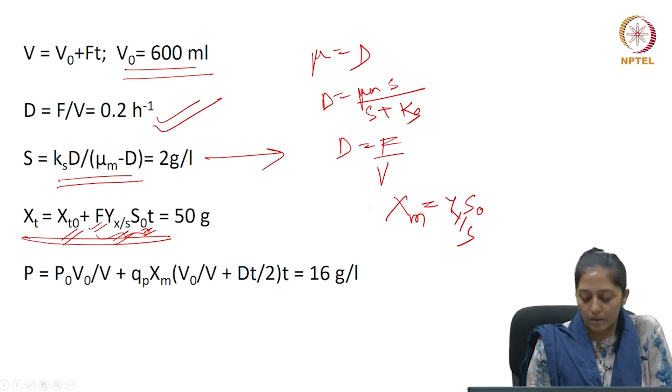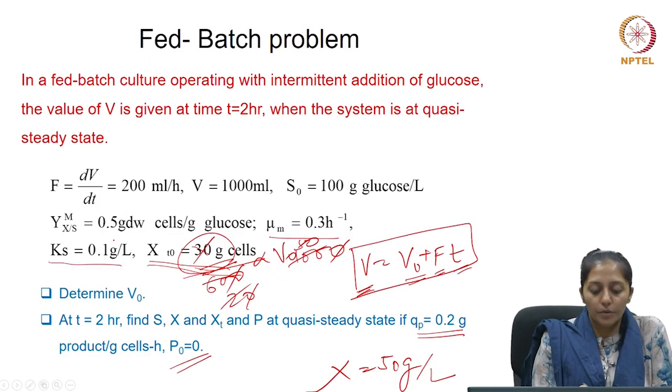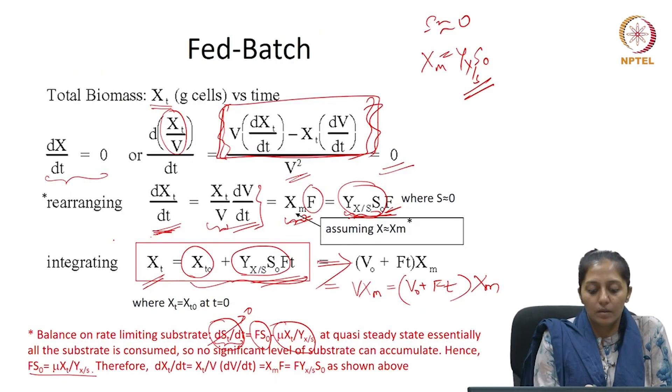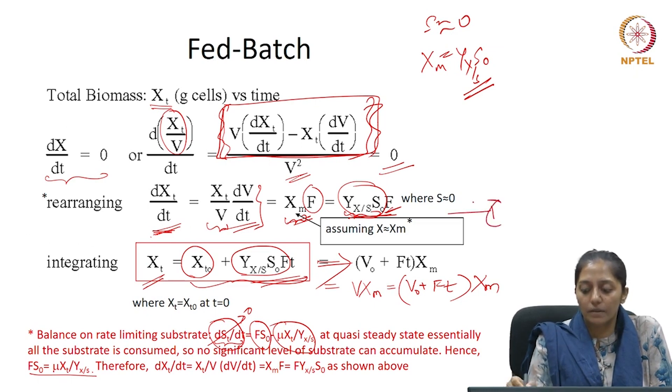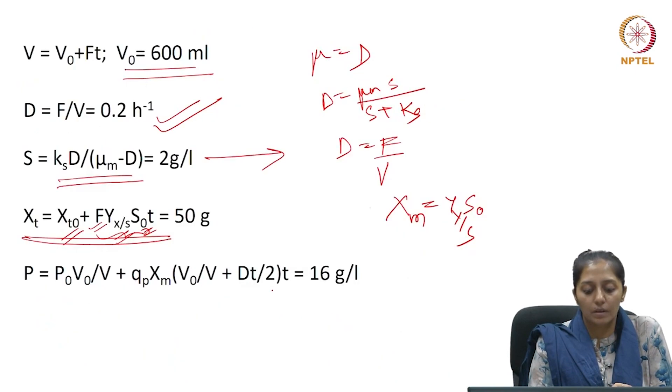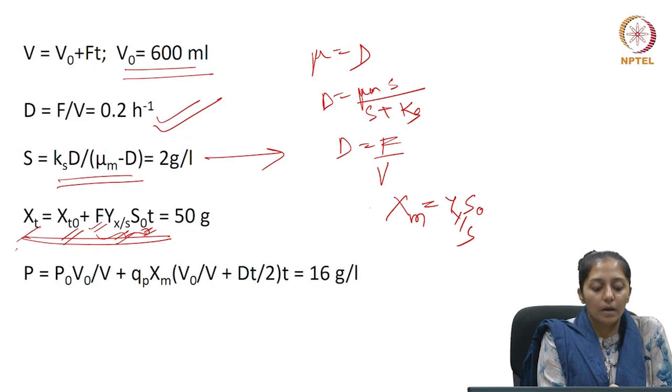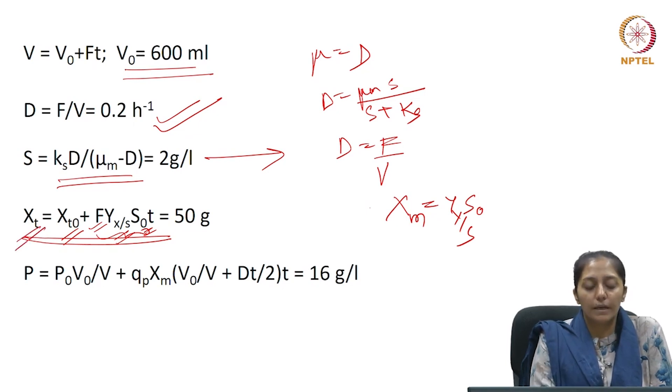So, now, if you remember, this is how when we integrated equation 1, we got equation 2. So, we have directly used equation 2 here to find the amount of biomass at 2 hours.